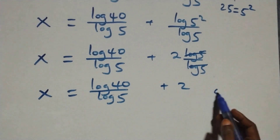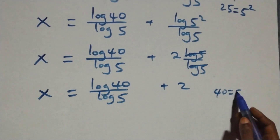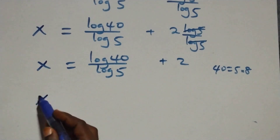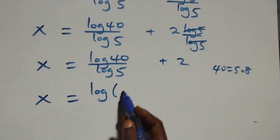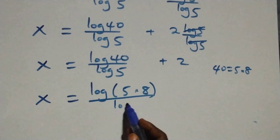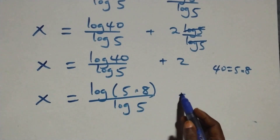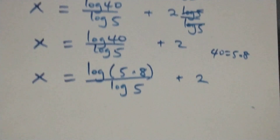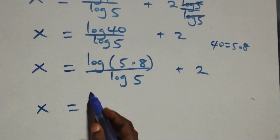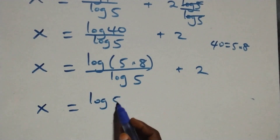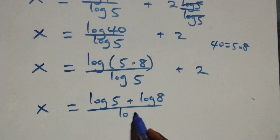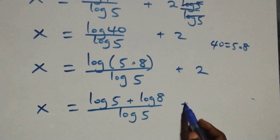Now, forty can be written as five times eight. So we have x equals log of five times eight over log five plus two. Applying the product rule of logarithm, this becomes x equals log five plus log eight over log five plus two.